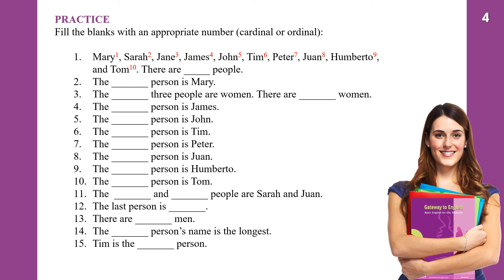Let us fill in the blanks with an appropriate number using either cardinal or ordinal. The names are Mary, Sarah, Jane, James, John, Tim, Peter, Juan, Humberto, and Tom — there are ten people. The first person is Mary. The first three people are women: Mary, Sarah, Jane.